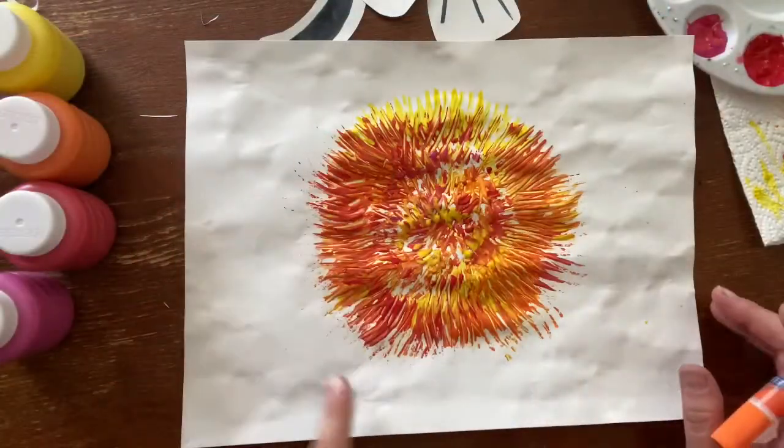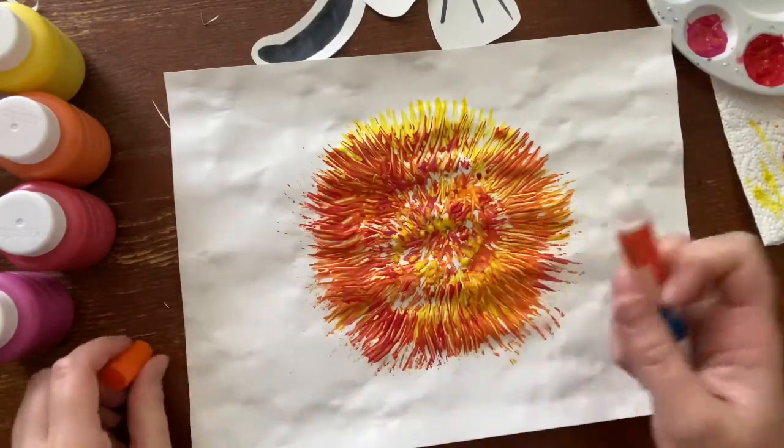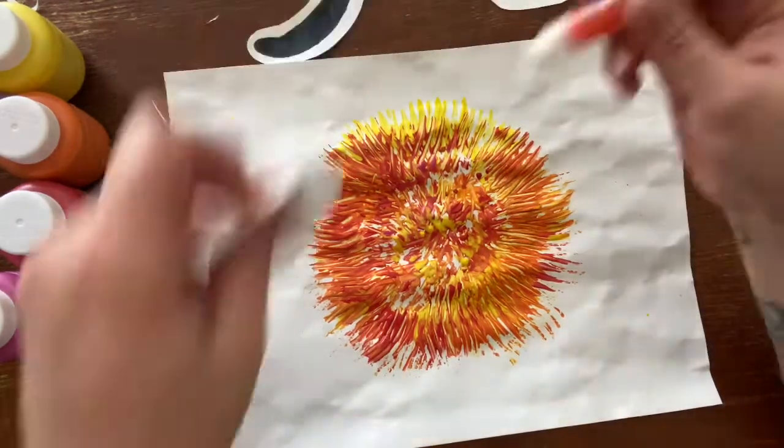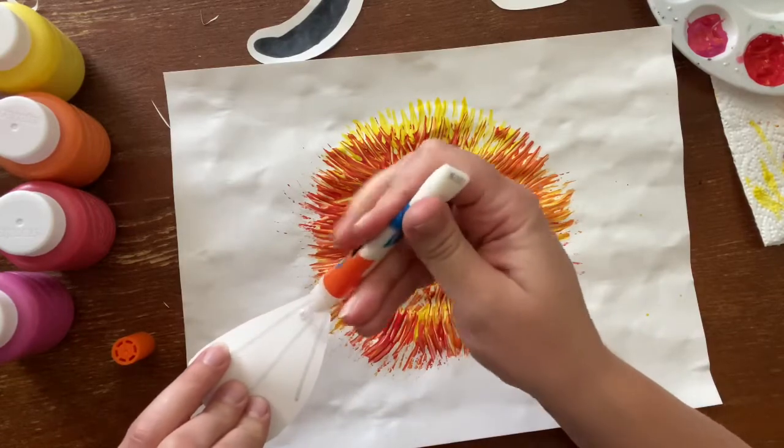So now that your paint has finally dried, you're going to take out your liquid glue, and you are going to go ahead and start gluing on all your body parts.